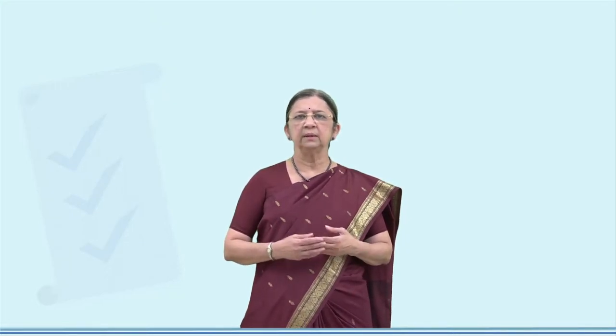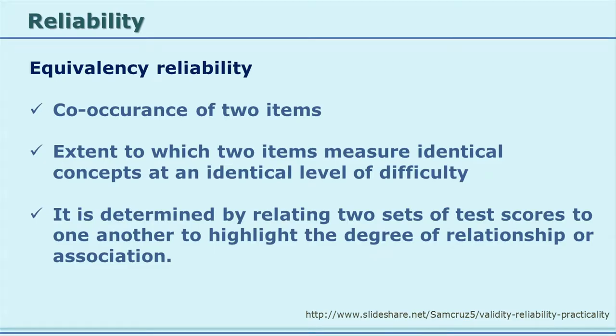Equivalency reliability: any tool will have certain questions, items, or statements that collect information on a concept selected by the researcher. If you see the co-occurrence on two similar questions getting similar information from respondents, there should be compatibility and co-occurrence. This is called equivalency reliability — the extent to which two items measure identical concepts at an identical level of difficulty.